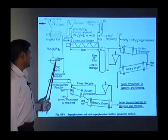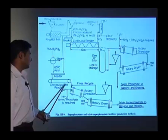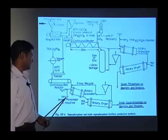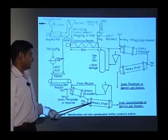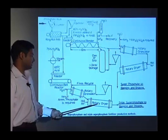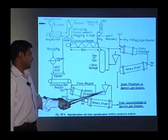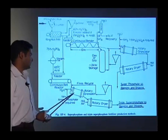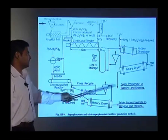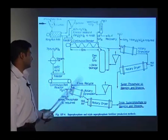Alternatively, we can use 65 percent phosphoric acid: in a continuous blade reactor it reacts, and then in the rotary granulator ammonium phosphate is added in terms of ammonia. Whatever the reaction mixture, we are drying in a rotary dryer by passing hot air. Fine particles are sent back to the rotary granulator. Then we can have the triple superphosphate for bagging and shipping.